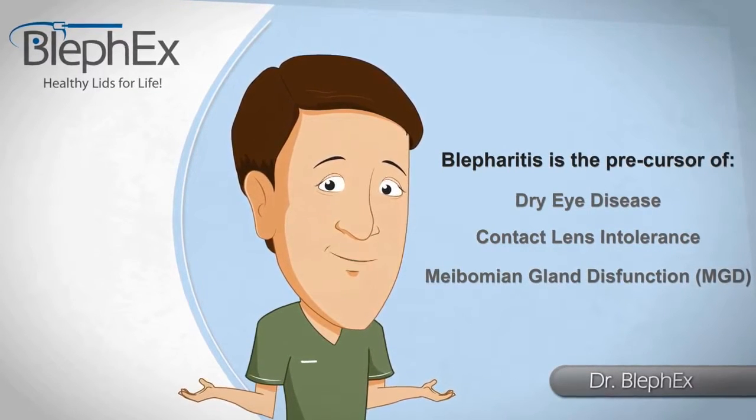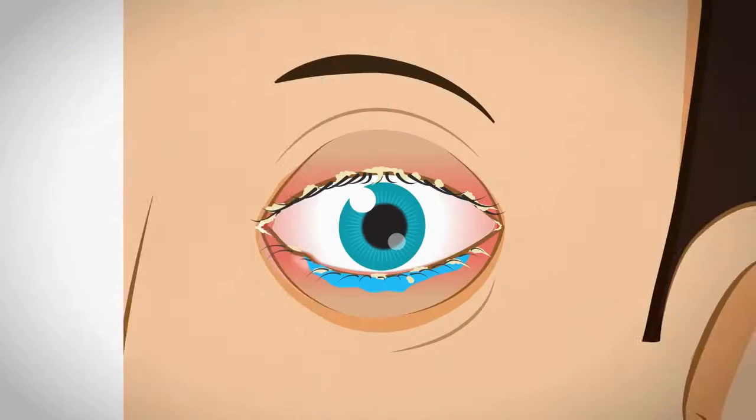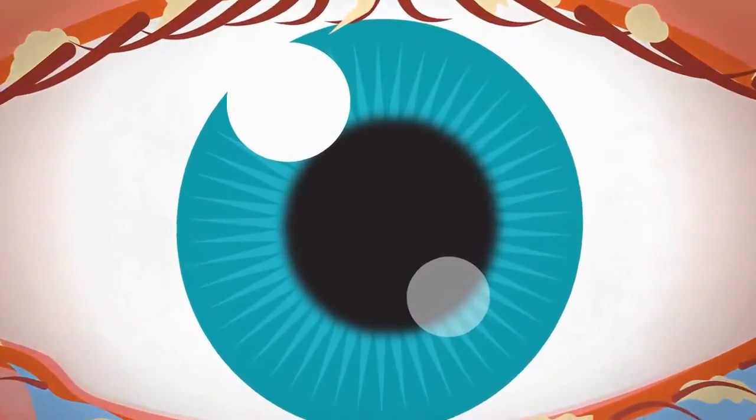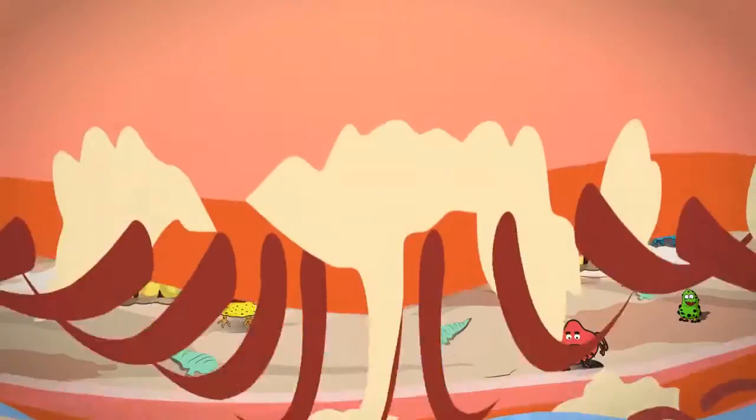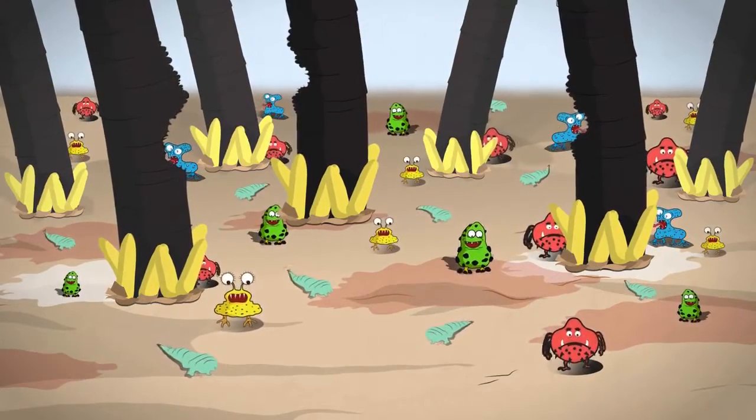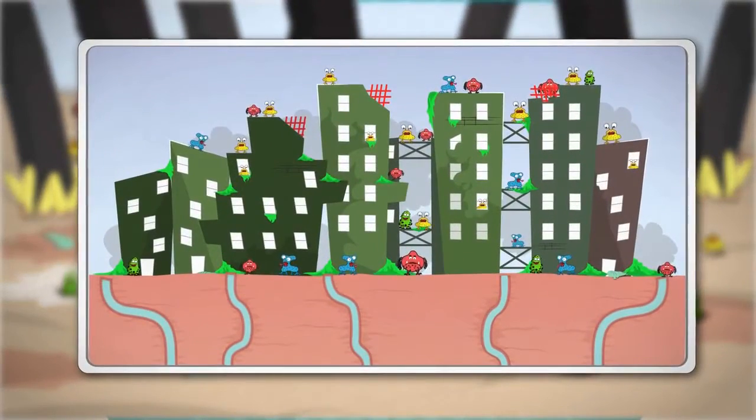Now let's go back and look at those eyelids again. Blepharitis is an overgrowth of otherwise normal bacteria living along the margins of the eyelids and lashes. This is the only place on the body that never gets washed your entire life. So over time, these bacteria build up and form a biofilm, like the plaque that forms on your teeth.